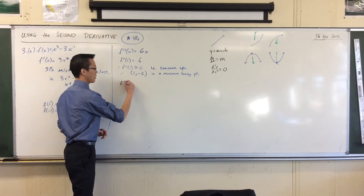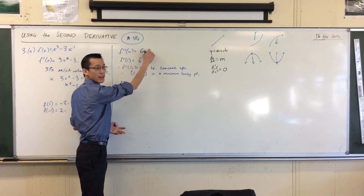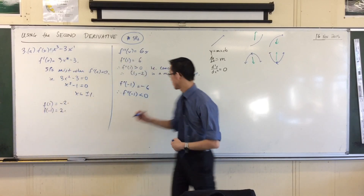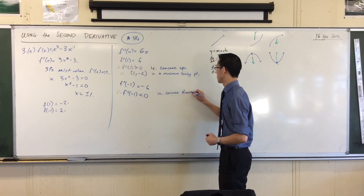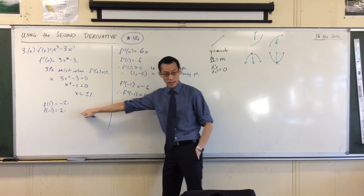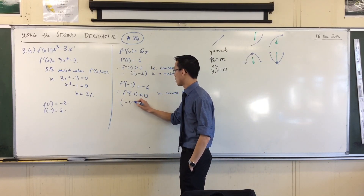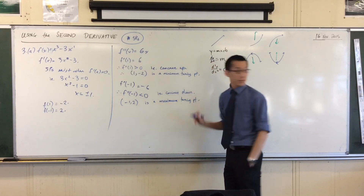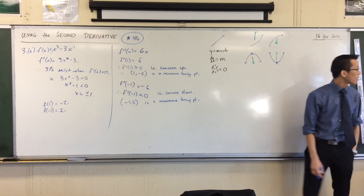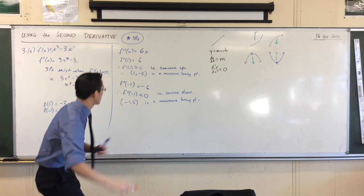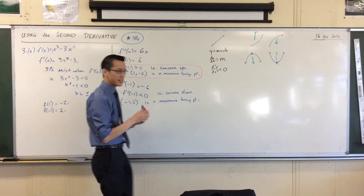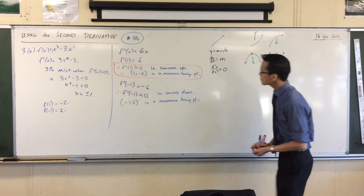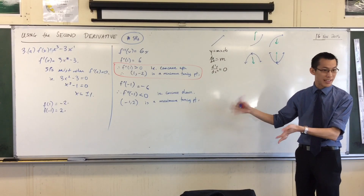For the other stationary point: f''(−1) = 6(−1) = −6. Therefore the second derivative is negative at that point, meaning it's concave down. Bringing together the coordinates and what we've determined: (−1, 2) is a maximum turning point. That's how we use the second derivative to determine the nature of stationary points. It's important to have f, f', and f'' clearly connected with sentences so the logic is transparent throughout.